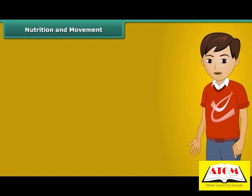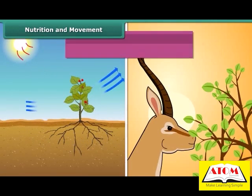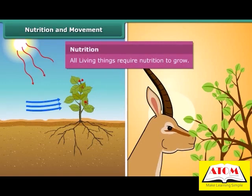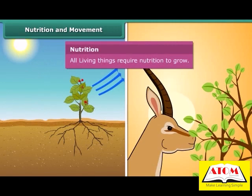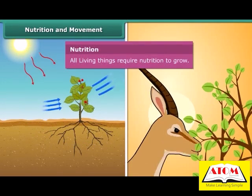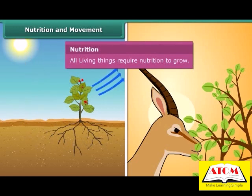Another important characteristic of living things is nutrition. All plants and animals require food to grow and survive. Plants prepare their own food by the process of photosynthesis in the presence of sunlight, whereas animals depend on plants for their food.